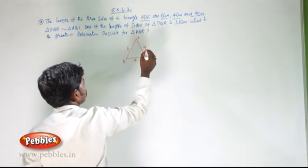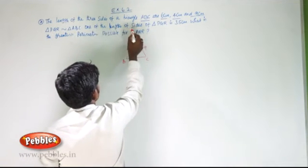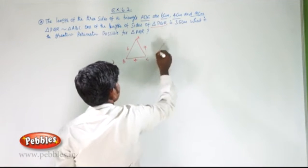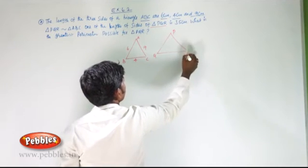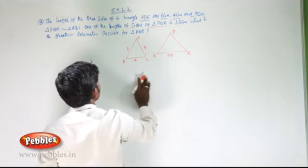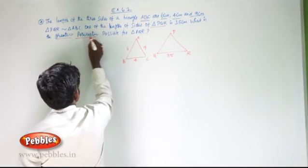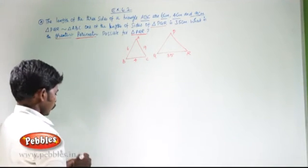One of the lengths of the sides of triangle PQR is 35 cm. What is the greatest possible perimeter of triangle PQR?